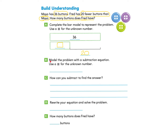Let's take a look at Part B: Model the problem with a subtraction equation. Use a square for the unknown number. We are looking for the unknown number. We don't know how many buttons Fred has, but we do know that Maya has 36 and Fred has 20 less, so we're going to subtract 20 from Maya's. If we take 20 away, we will have what Fred has left, which is our unknown number.